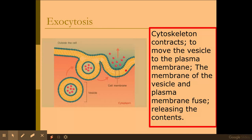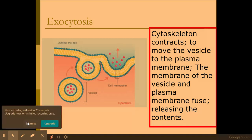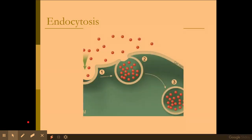Exocytosis is the process by which the contents of a vesicle are expelled from the cell. The vesicle containing the substances moves towards the plasma or cell surface membrane via the cytoskeleton contracting. Then, as you can see in this diagram, the phospholipid bilayer and the membrane surrounding the vesicle fuse together, releasing the contents outside of the cell. Endocytosis is basically the opposite — substances push into the membrane and eventually pinch off to form a vesicle. Exam questions on endocytosis are very rare; it's mainly exocytosis you need to focus on.